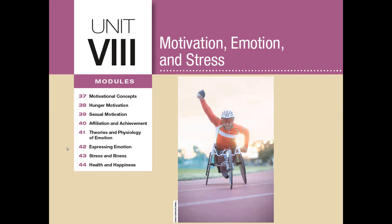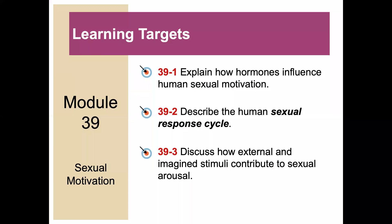Welcome to Unit 8: Motivation, Emotion, and Stress. These slides align to the textbook Meyer Psychology for the AP Course, Third Edition. Today we're talking about Module 39: Sexual Motivation. There are three learning targets: to explain how hormones influence human sexual motivation, to describe the human sexual response cycle, and to discuss how external and imagined stimuli contribute to sexual arousal.